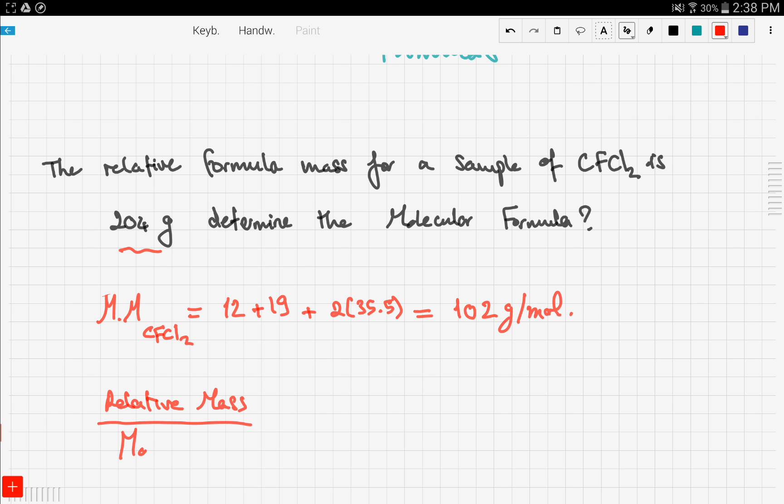So that would be 204 grams divided by 102 grams per mole and you get 2.